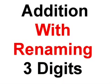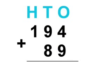Then we are doing addition with renaming three digits. The sum we're going to be looking at today is 194 plus 89.